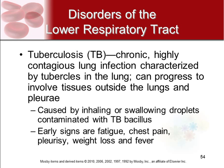Tuberculosis is characterized by tubercles in the lungs and can progress to involve other tissues outside the lungs and pleura. It's caused by inhaling or swallowing contaminated bacterial droplets. Early signs include fatigue, chest pain, pleurisy, weight loss, and fever. Over time, a cough develops with bloody sputum. Without treatment, tuberculosis can be fatal.